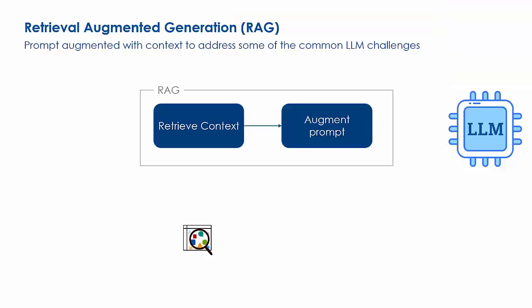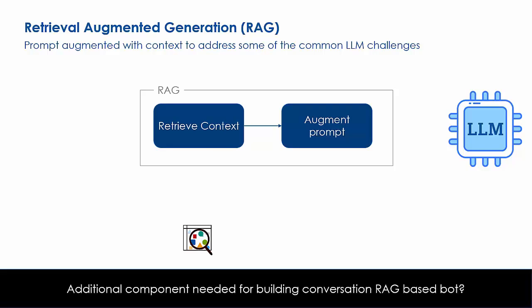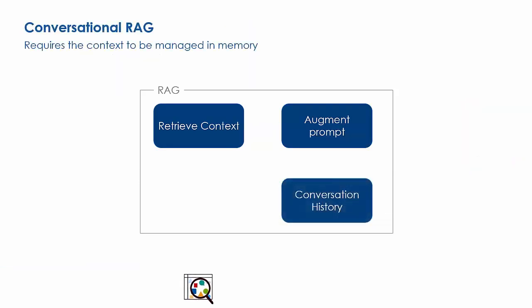This naive or basic implementation of RAG is suitable for a single-turn conversation or one-off task, but it needs to be enhanced for building multi-turn conversation bots. Can you guess which component is missing here for building a RAG-based conversation bot? If you said memory or conversation history, then you are right.